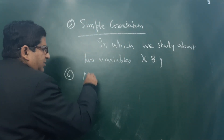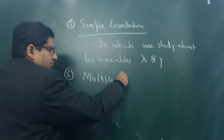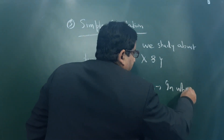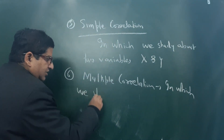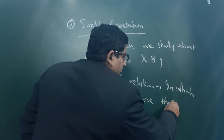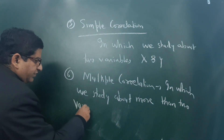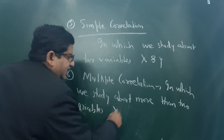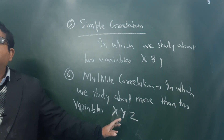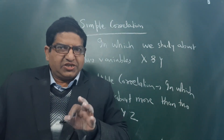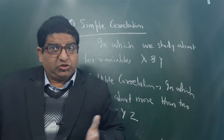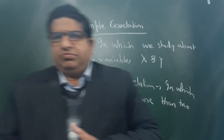The sixth type is multiple correlation, in which we study more than two variables — like x, y, z or even more. For example, studying rice, wheat, and climate together — or rice, wheat, maize, and climate — that is multiple correlation.